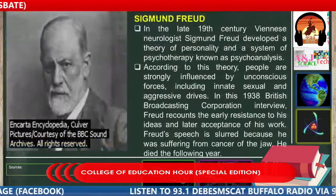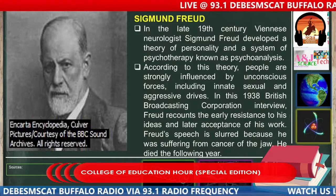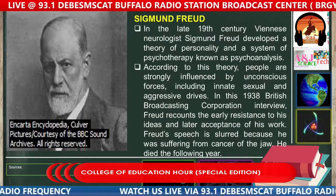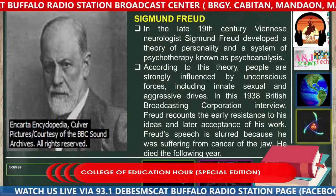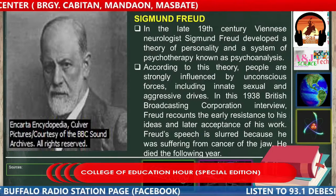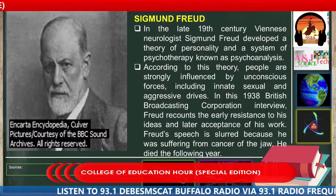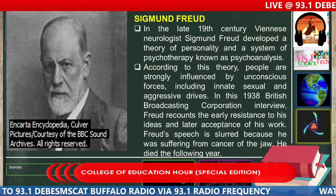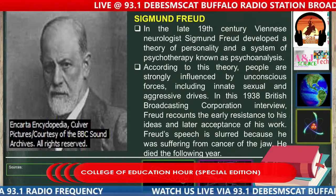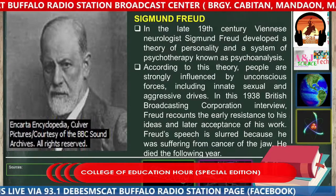Let's proceed with Sigmund Freud. In the late 19th century, Viennese neurologist Sigmund Freud developed a theory of personality and a system of psychotherapy known as psychoanalysis. According to this theory, people are strongly influenced by unconscious forces including innate sexual and aggressive drives. He coined the terms Electra complex and Oedipus complex — the tendency of a daughter to have a rival or intimate feeling toward her father, and the Oedipus complex for the male equivalent.